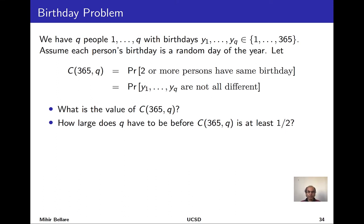Let's recap a bit. What we have done is introduced a metric or definition of security called PRF security. It applies to any family of functions and is defined through a game that allows us to associate to any adversary who plays this game a number called its advantage. The higher the advantage, the better the adversary is doing at violating PRF security of the family of functions in question. Once we have this metric, its motivation was as a model or goal for block ciphers — something that we would like block ciphers to meet or satisfy.